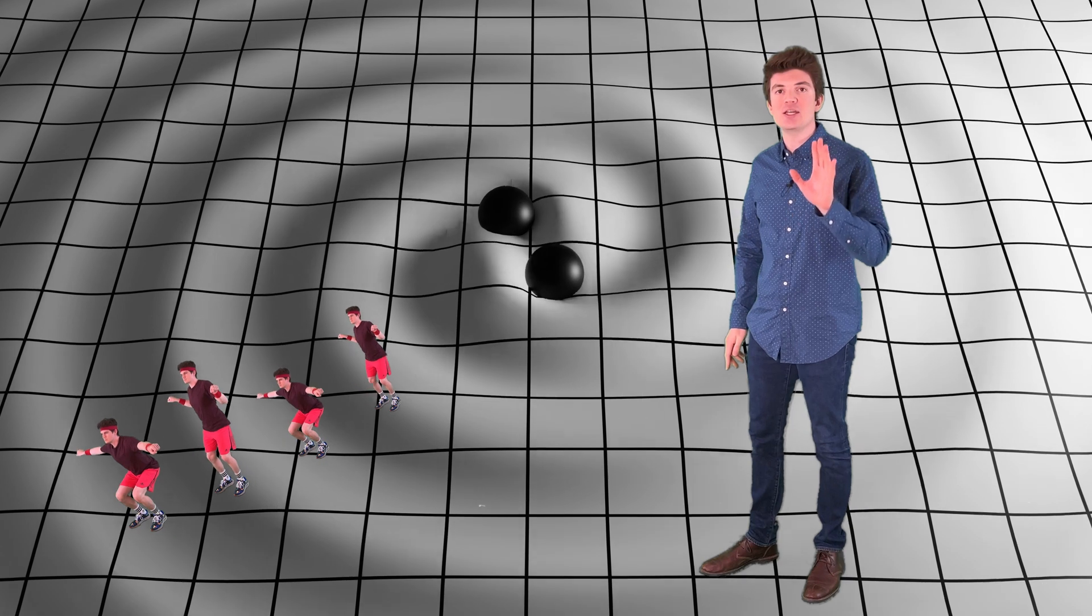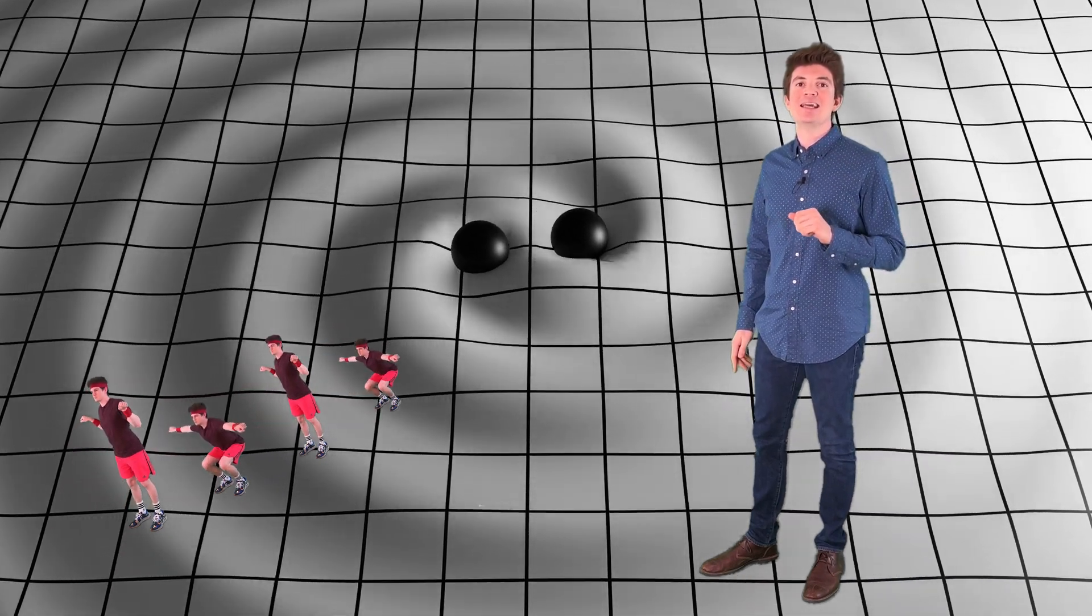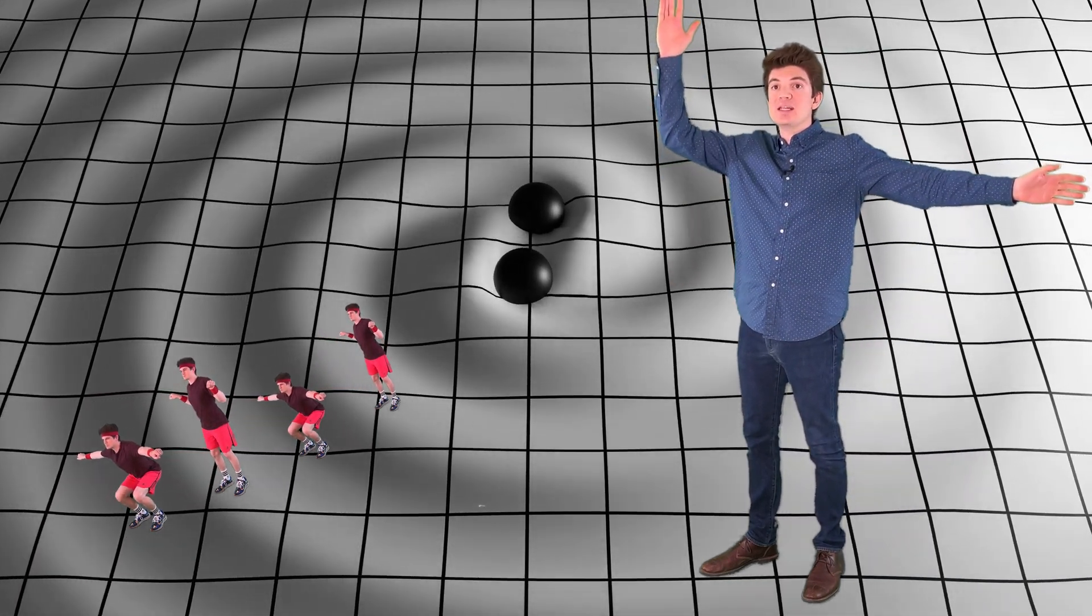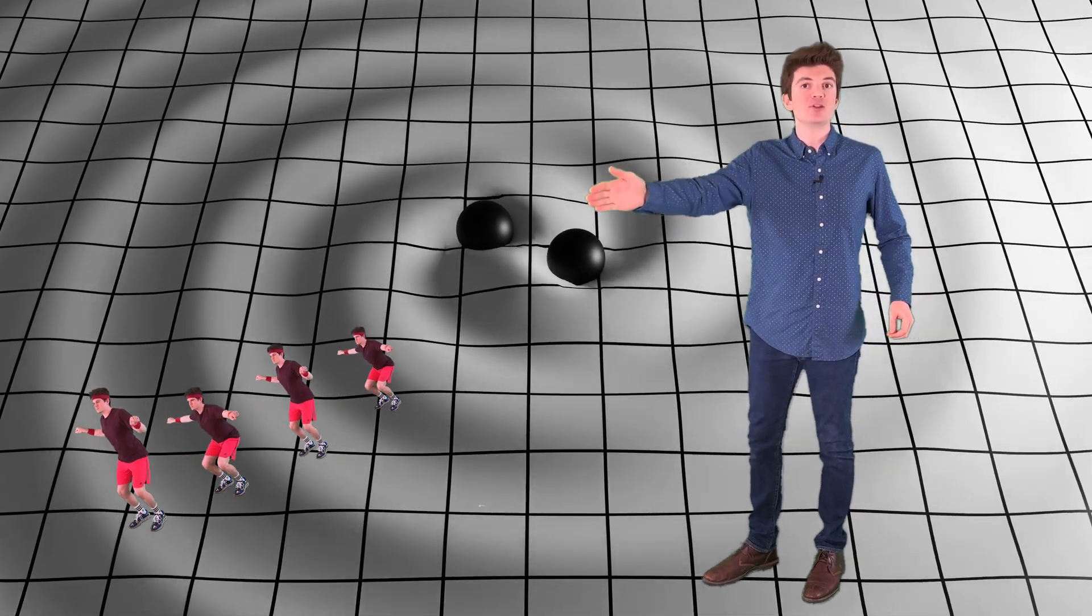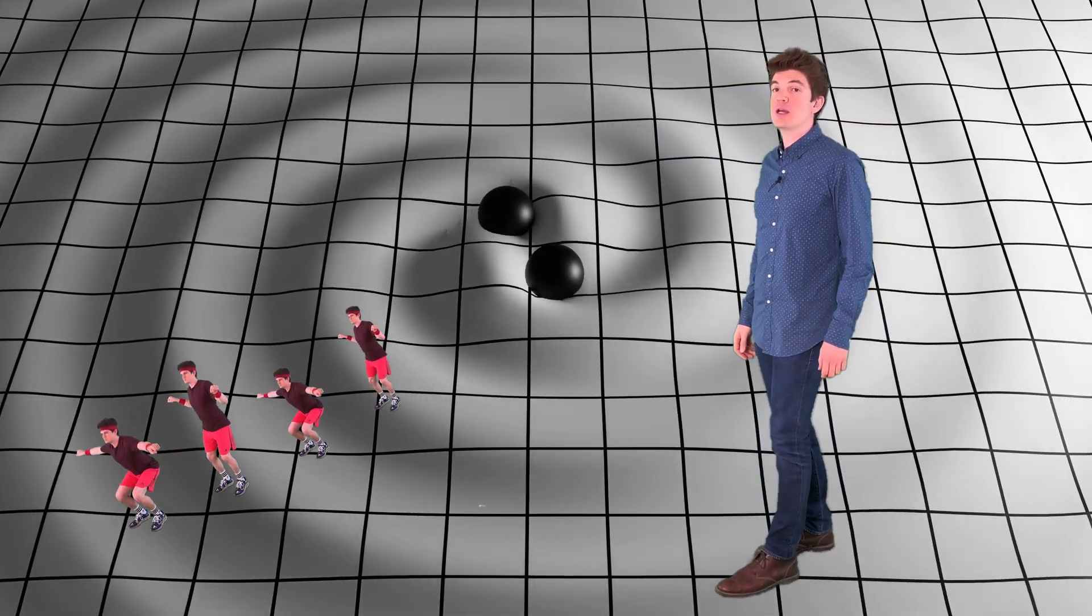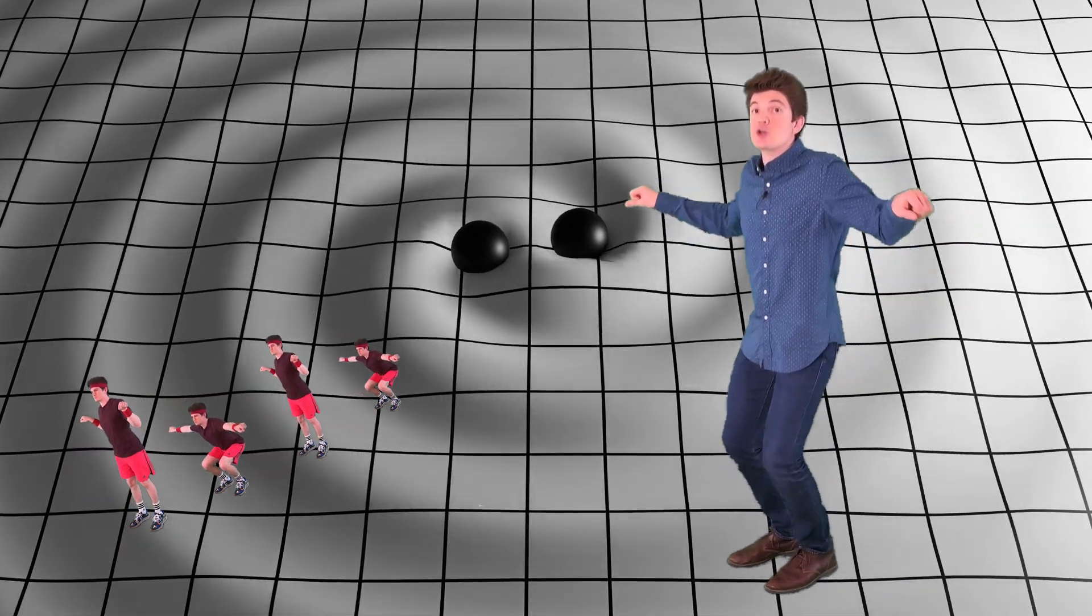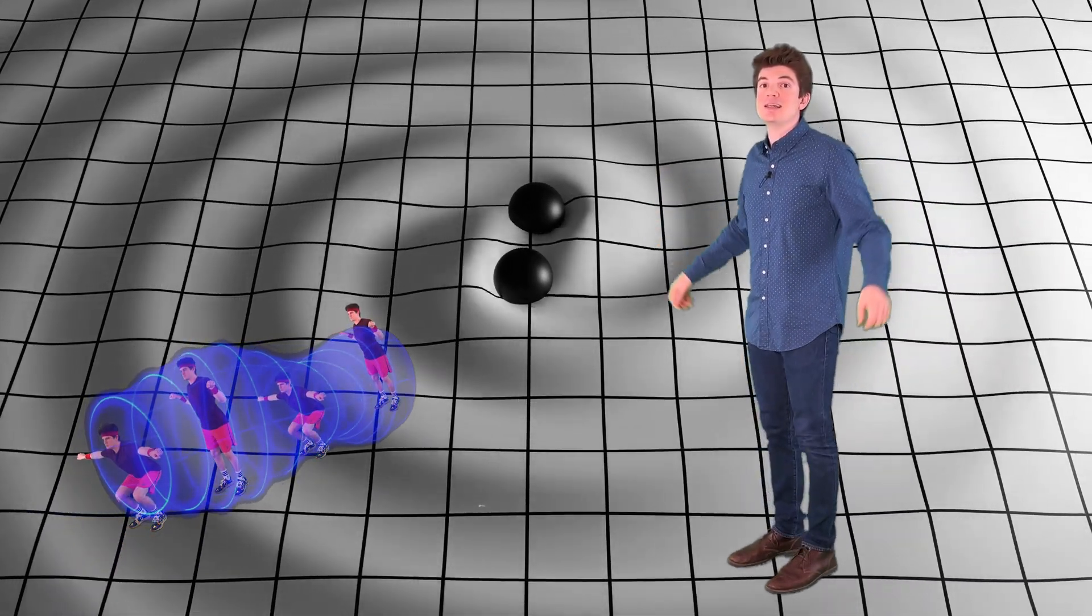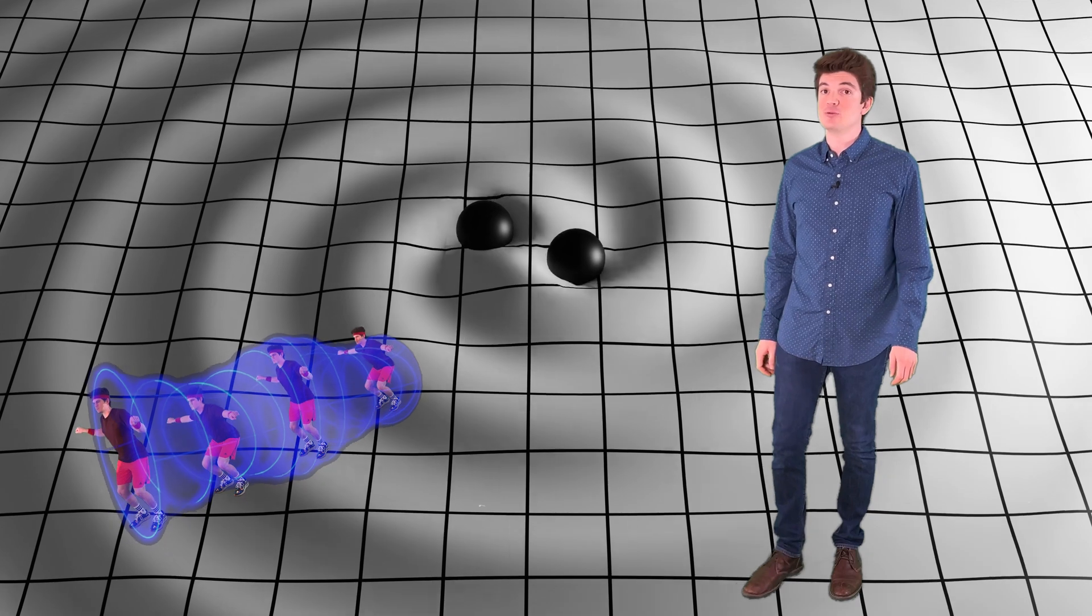That's because gravitational waves distort space in the directions perpendicular to the direction the wave is traveling. So the wave is traveling in the forward-back direction and the dancers are shrinking and expanding in the up-down and left-right directions.